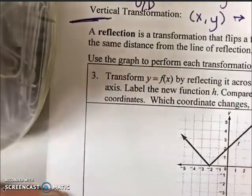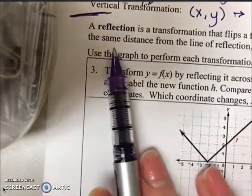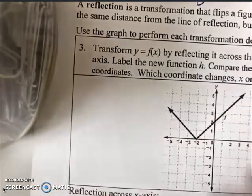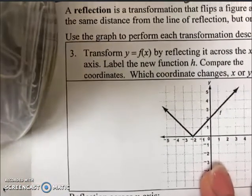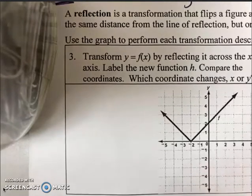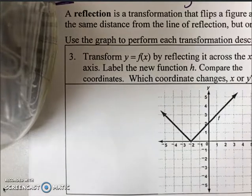Now we're moving on to a different type of transformation, which is a reflection. Reflection you've also discussed in geometry. A reflection is a transformation that flips a figure across a line called a line of reflection. Each reflected point is the same distance from the line of reflection, but on opposite sides of the line.